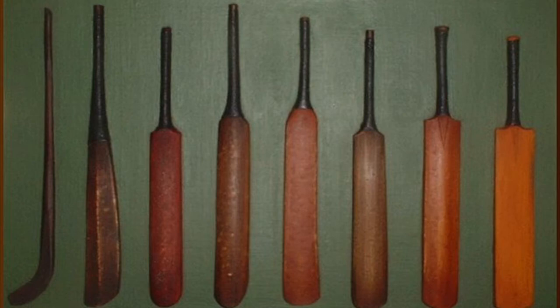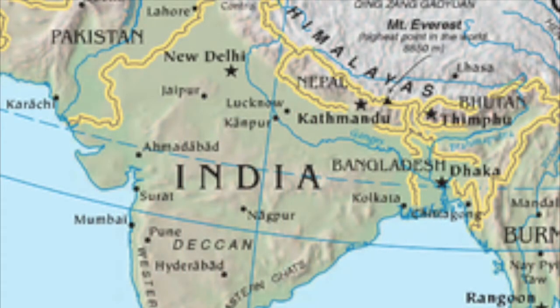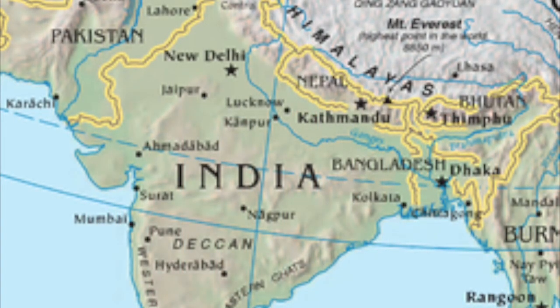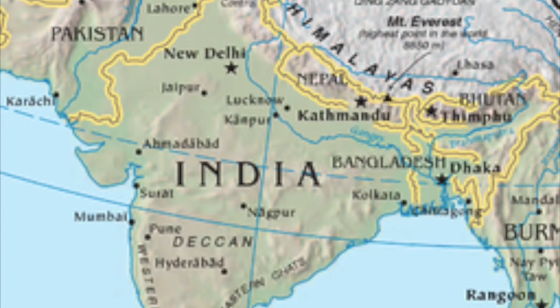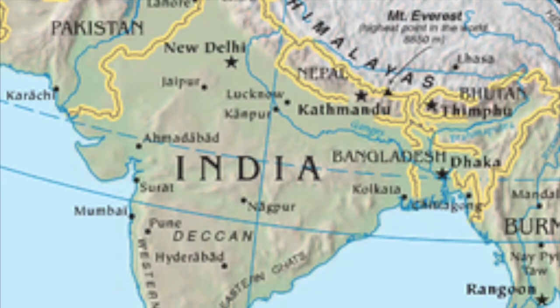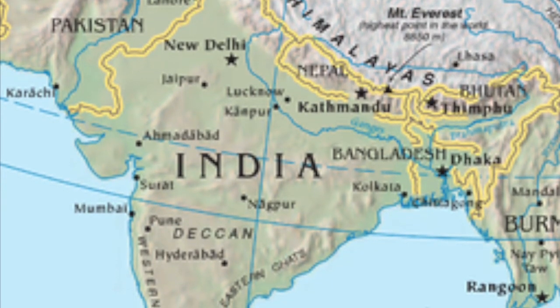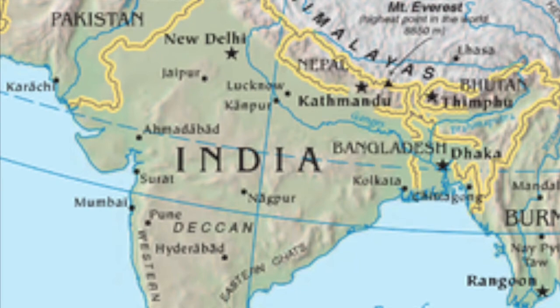This is why traditionally, even at international level, the umpire is chosen from the home side. The cricketing code of honour means that he will slightly favour the visitors.